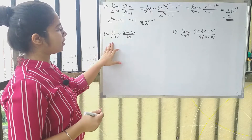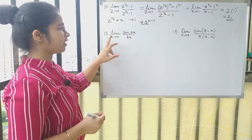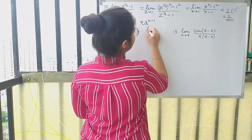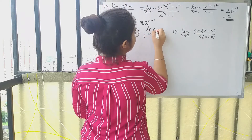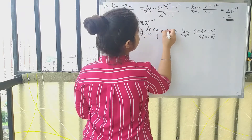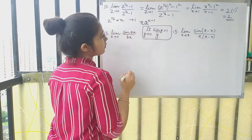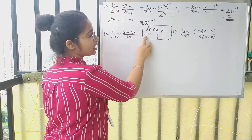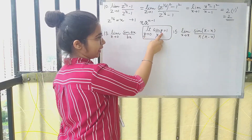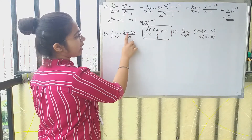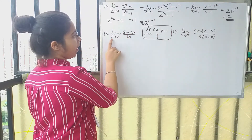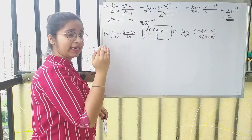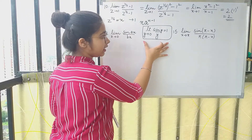Moving on to the 13th question, we have to find the limit of sin(ax)/bx as x tends to 0. We have the theorem: limit y→0 of sin(y)/y = 1. When using this theorem, the angle of sin and the denominator term must match. Here the angle of sin is ax, but the denominator is bx, so we need to arrange it by multiplying and dividing to get it into the correct form.